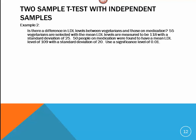Looking at another example, see if you can walk through and do this on your calculator with me. I'm not going to bring my calculator out this time. But here, is there a difference in LDL levels between vegetarians and those on medication? 55 vegetarians are selected with the mean LDL levels are measured to be 118, with a standard deviation of 25. 50 people on medication were found to have a mean LDL level of 109, with a standard deviation of 20. This is a significance level of 0.01.